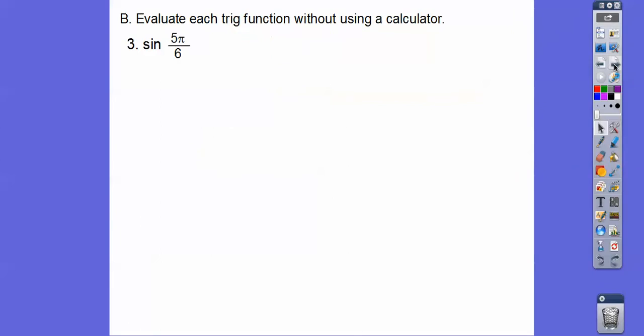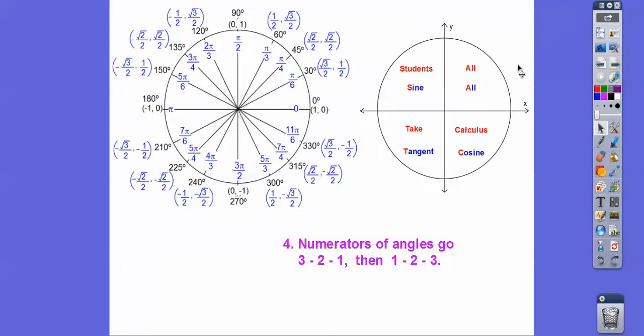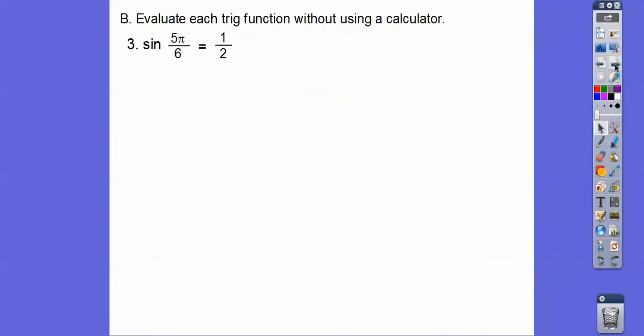How about the sine of 5π/6? That's in quadrant 2 right there. Using cosine comma sine ordering, the sine of 5π/6 is positive one-half.